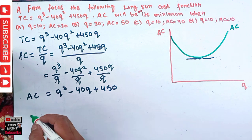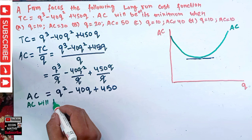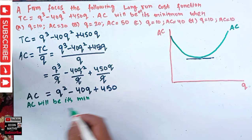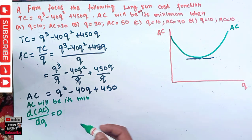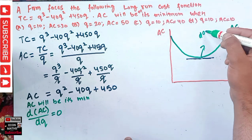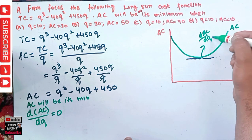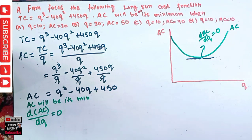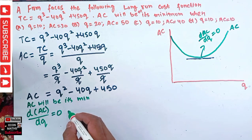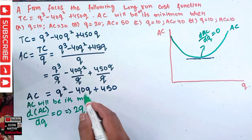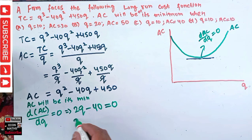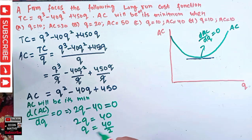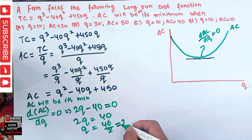Average cost will be at its minimum when dAC/dQ equals zero. Differentiating AC equals Q squared minus 40Q plus 450 with respect to Q: the derivative of Q squared is 2Q, the derivative of 40Q is 40, and the derivative of the constant 450 is zero. Setting this equal to zero gives 2Q minus 40 equals zero, so 2Q equals 40, and therefore Q equals 20.